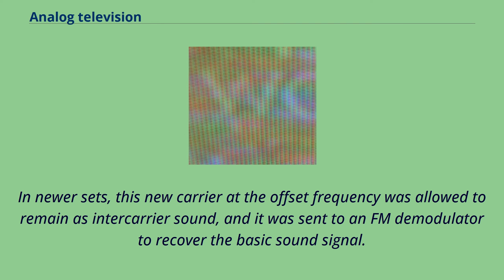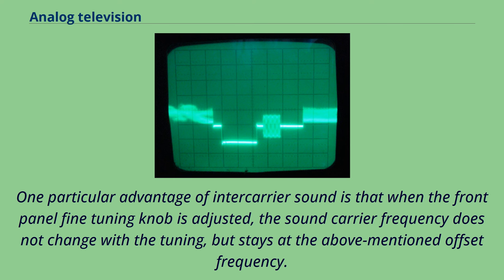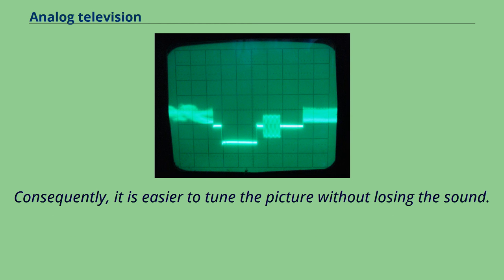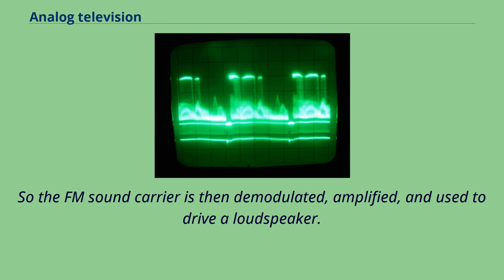One particular advantage of intercarrier sound is that when the front panel fine tuning knob is adjusted, the sound carrier frequency does not change with the tuning, but stays at the above mentioned offset frequency. Consequently, it is easier to tune the picture without losing the sound. Until the advent of the NICAM and MTS systems, television sound transmissions were monophonic.